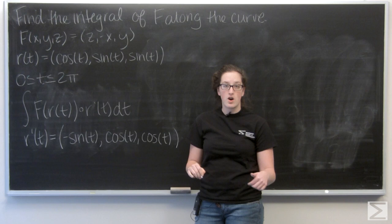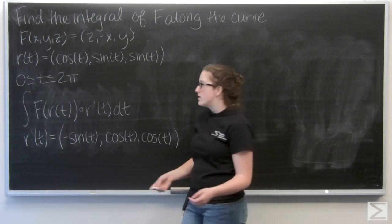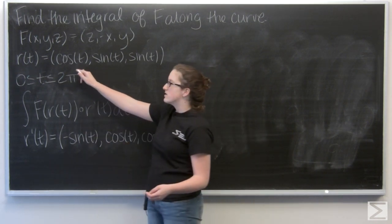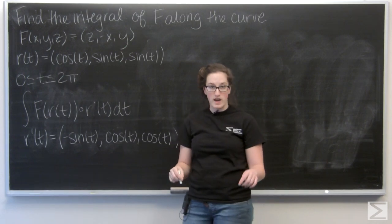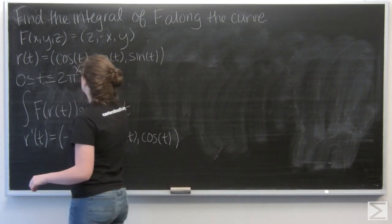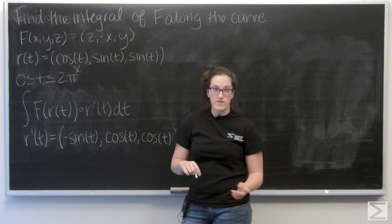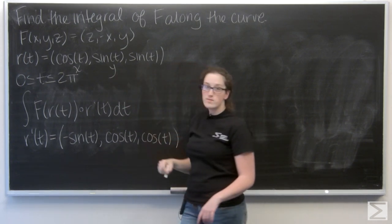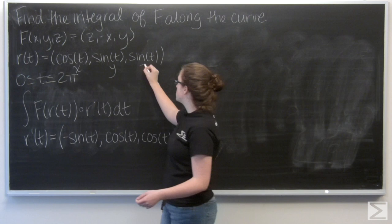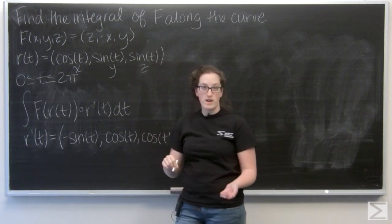Now we want to find f of r of t. So to do that, I want to plug the i component of r of t in everywhere I see an x, and then the j component in everywhere I see a y, and the k component everywhere I see a z. So let's go ahead and do that.